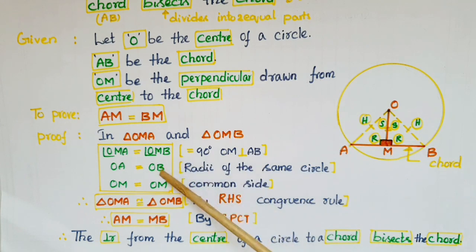And OA is equal to OB. These two are radii of the same circle, so those are equal. And OM is equal to OM.